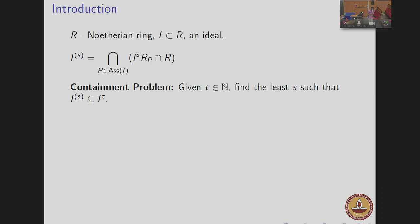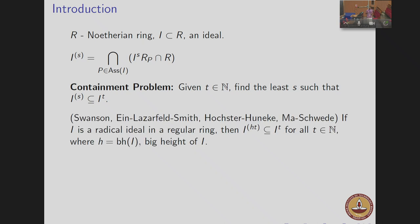This is a very generally stated problem. There were a lot of attempts in this direction — a series of papers starting with Irina Swanson, then Lazarsfeld-Smith, Hoekstra-Huneke. These papers have already been mentioned in a couple of talks here. In the characteristic zero case, one has that I^{(HT)} is contained in I^T, where H denotes the big height — the maximal height of associated primes.